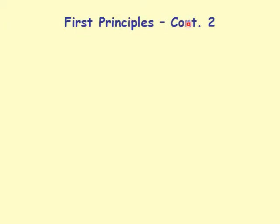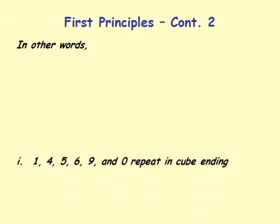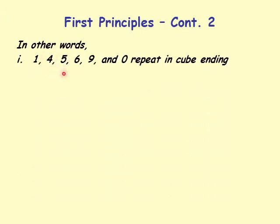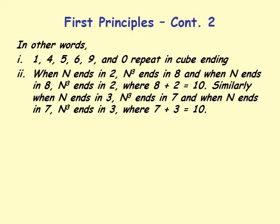In other words, 1, 4, 5, 6, 9, and 0 repeat in the cube ending — so if a number ends in one of these digits, its cube also ends in the same digit. When n ends in 2, n cubed ends in 8; and when n ends in 8, n cubed ends in 2, where 8 plus 2 equals 10. Similarly, when n ends in 3, n cubed ends in 7; and when n ends in 7, n cubed ends in 3, where 7 plus 3 is 10.